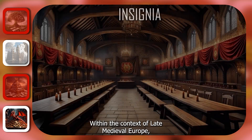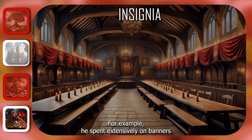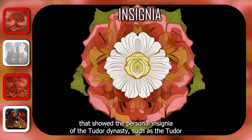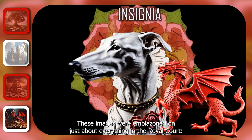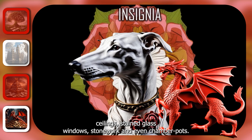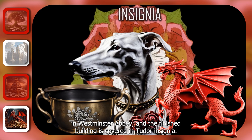Within the context of late medieval Europe, there is evidence to suggest that Henry did spend extravagantly on art and pageantry to bolster the Tudor image. He spent extensively on banners and artwork that promoted the Tudor rose. All members of the royal household had to wear emblems and badges showing the personal insignia of the Tudor dynasty — such as the Tudor rose, the red Welsh dragon, and John of Gaunt's greyhound. These images were emblazoned on just about everything in the royal court: ceilings, stained glass windows, stonework, and even chamber pots. In 1503, Henry commissioned the building of his personal chapel in Westminster Abbey, and the finished building is covered in Tudor insignia. These visual images were a constant reminder that the Tudors, with their Lancastrian heritage, were the ruling dynasty.